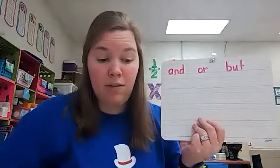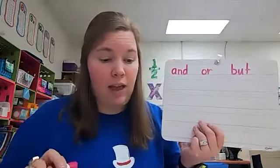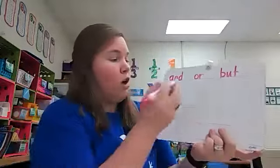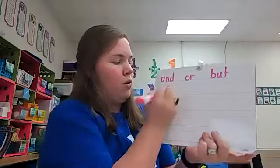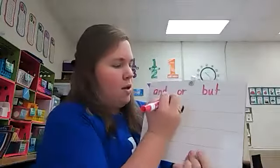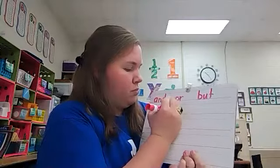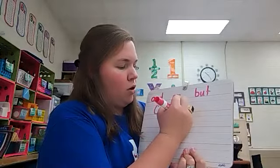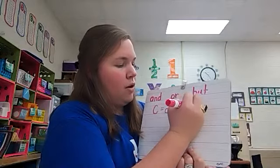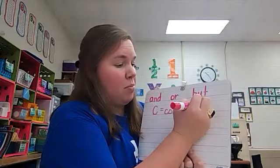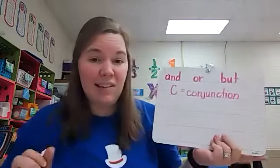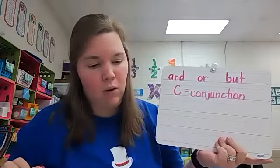Those are the three we typically see. Conjunctions should be memorized and recognized on sight. We label conjunctions with a capital C. So C is for conjunction. We are going to start seeing these in our practice sentences, and this is now another part of speech that we know.